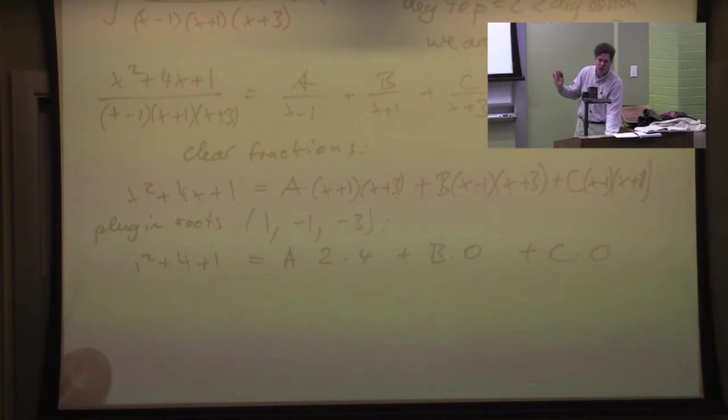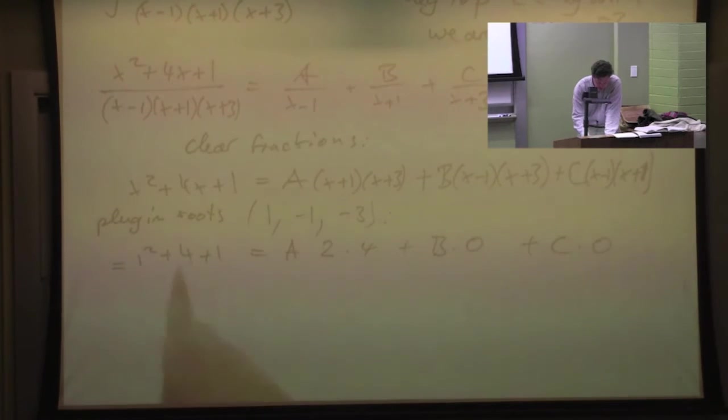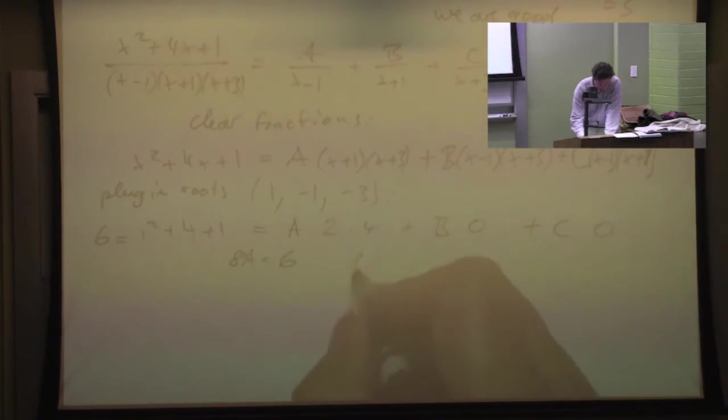Two of them go away already. So you're really in good shape. What do you got here? 6, I guess. So 6 is 8A. 8A is equal to 6. So A is 6 over 8 or 3 over 4.